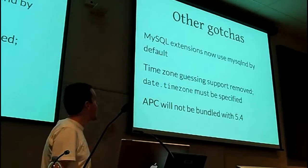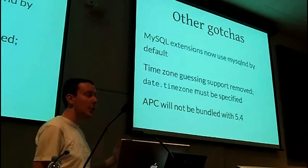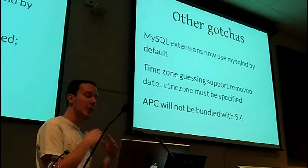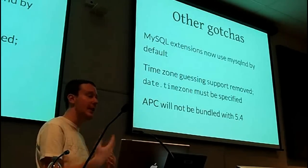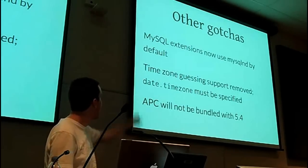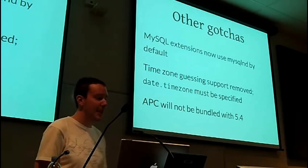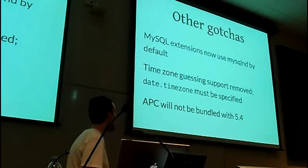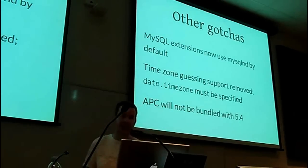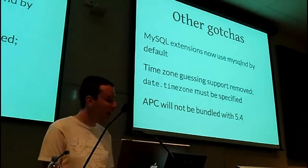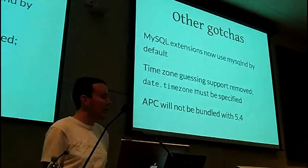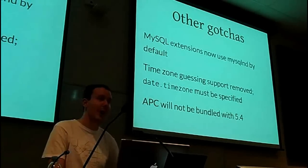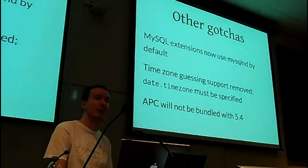The MySQL extension now uses MySQL ND, the native driver, by default. In 5.3 it was bundled but you had to explicitly enable it; in 5.4 it's the other way around — if you want to use an external MySQL client library, you now have to specially enable that. Support for timezone guessing has been removed because it never really worked very well, so as the warnings have been telling you for about the last four years, you must specify your timezone in php.ini. And in spite of what a lot of people said at the start of the year, APC will not be bundled with 5.4 — it just wasn't really ready for bundling. It may come in a future point release, but it wasn't ready for this first release.